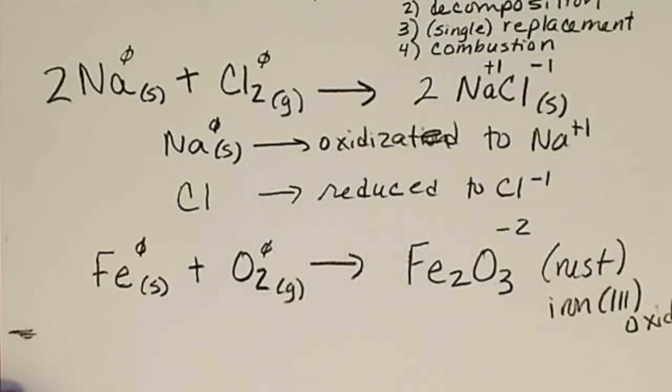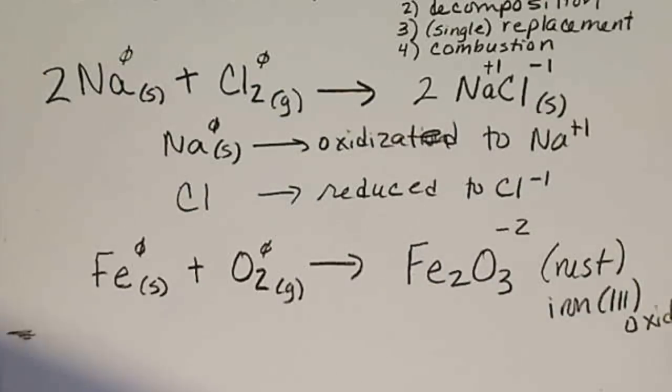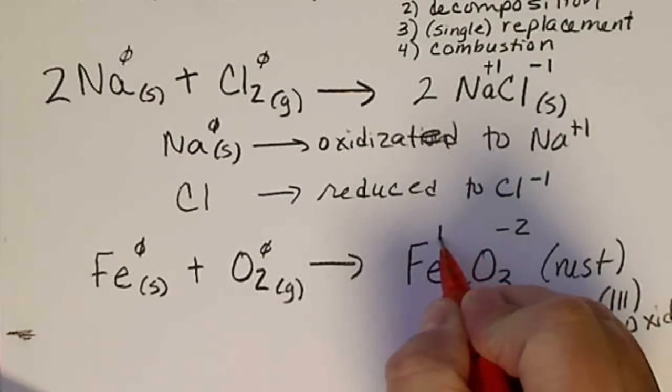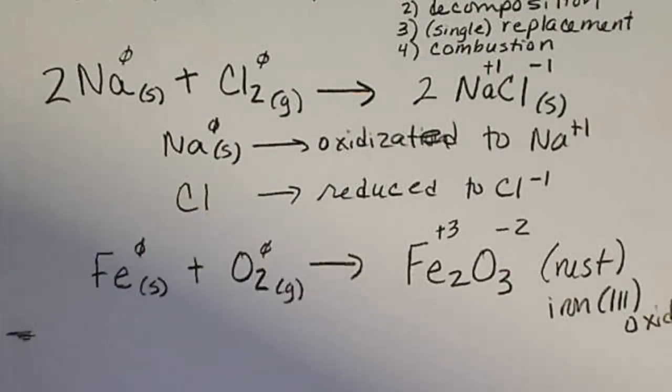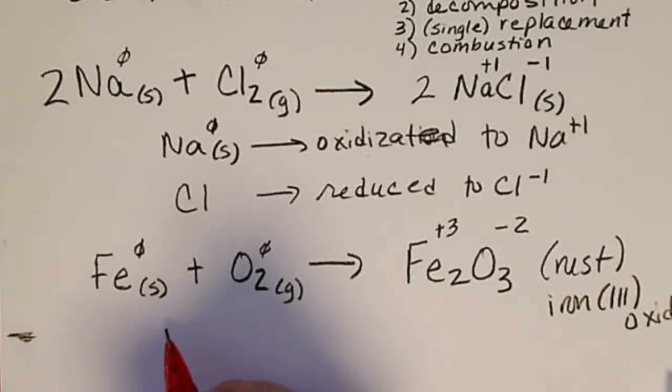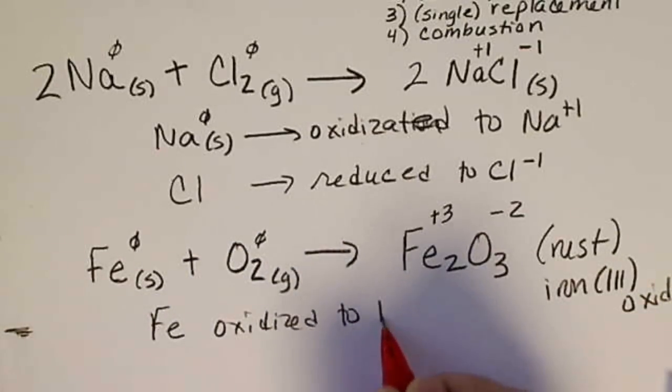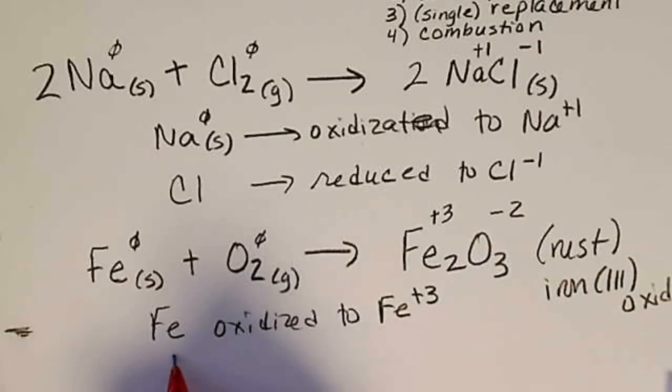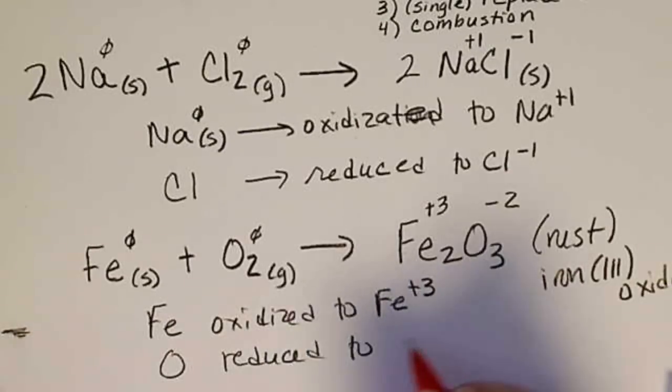In this case, oxygen, in a simple ionic compound, is always going to have the negative two charge. Iron, in this case, we could calculate its oxidation state, would be a plus three. So again, the metal was oxidized, iron is oxidized to iron plus three. And an oxygen atom is reduced to the oxide ion, O minus two.